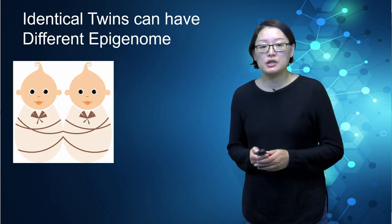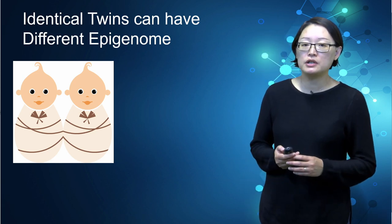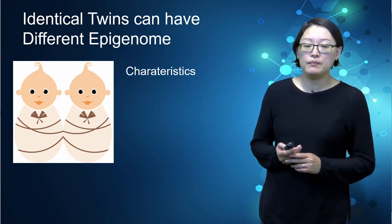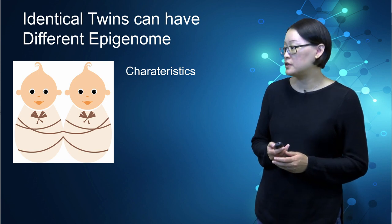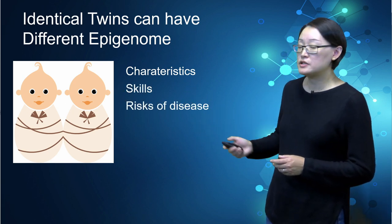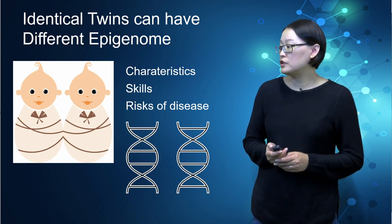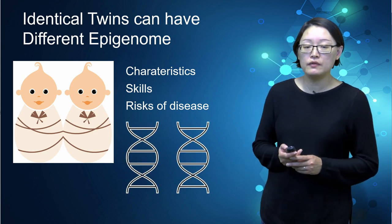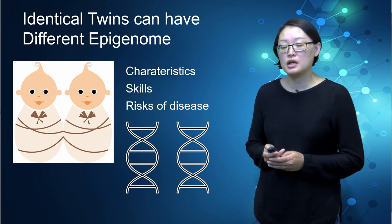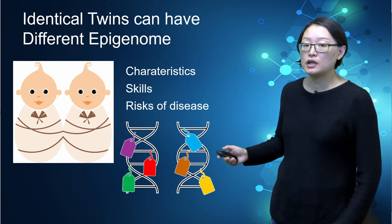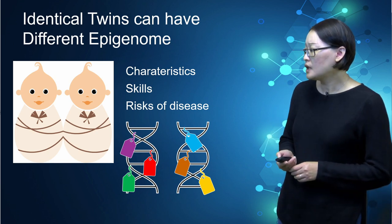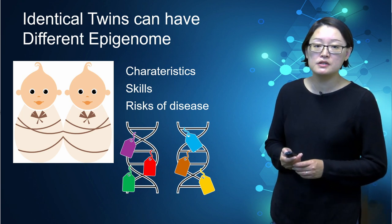A good example of how epigenetics can influence the phenotype without altering the DNA sequence is identical twins. They share the same identical genome but with different epigenomes. Hence, we see differences in their characteristics, their skills, as well as the risk of diseases. The phenotypes of humans depend not only on the genomes inherited from parents, but also on epigenetics, which works by adding or removing chemical marks to determine how much or how little of a gene is expressed. The whole collection of these chemical marks is known as the epigenome.